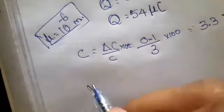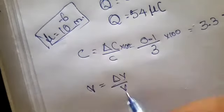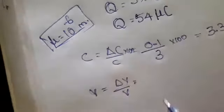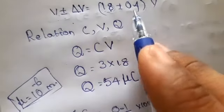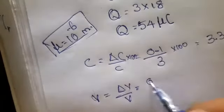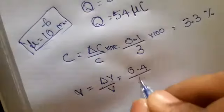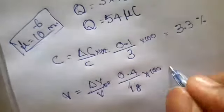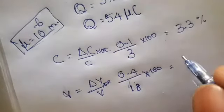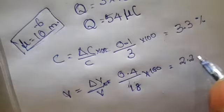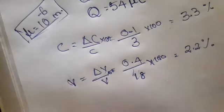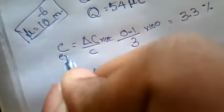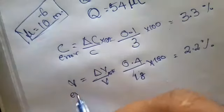Next one is voltage. Voltage is the same. Delta V by V equals, what is delta V here? Delta V is 0.4 divided by V which is 18 times 100. Here also 100 will be there. The final answer I calculated is 2.2 percentage. This is error.